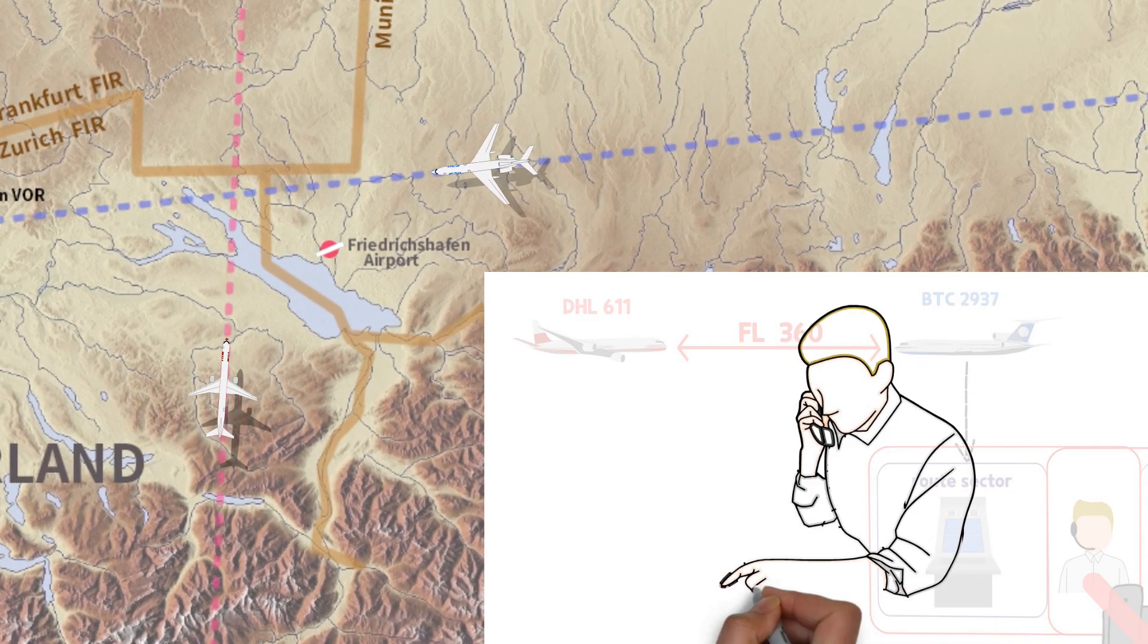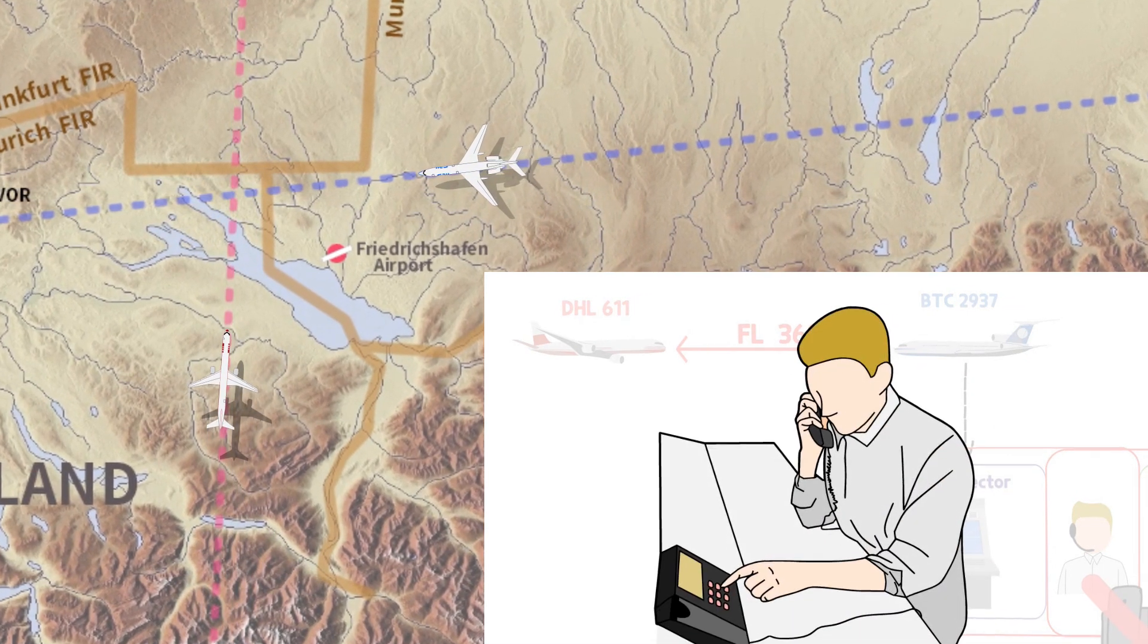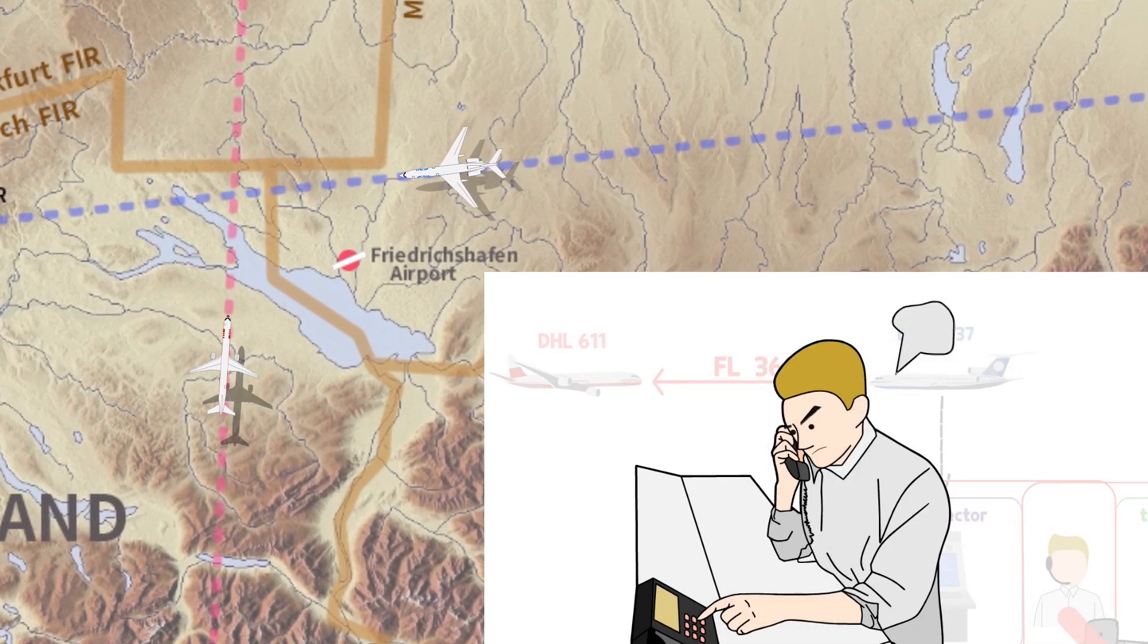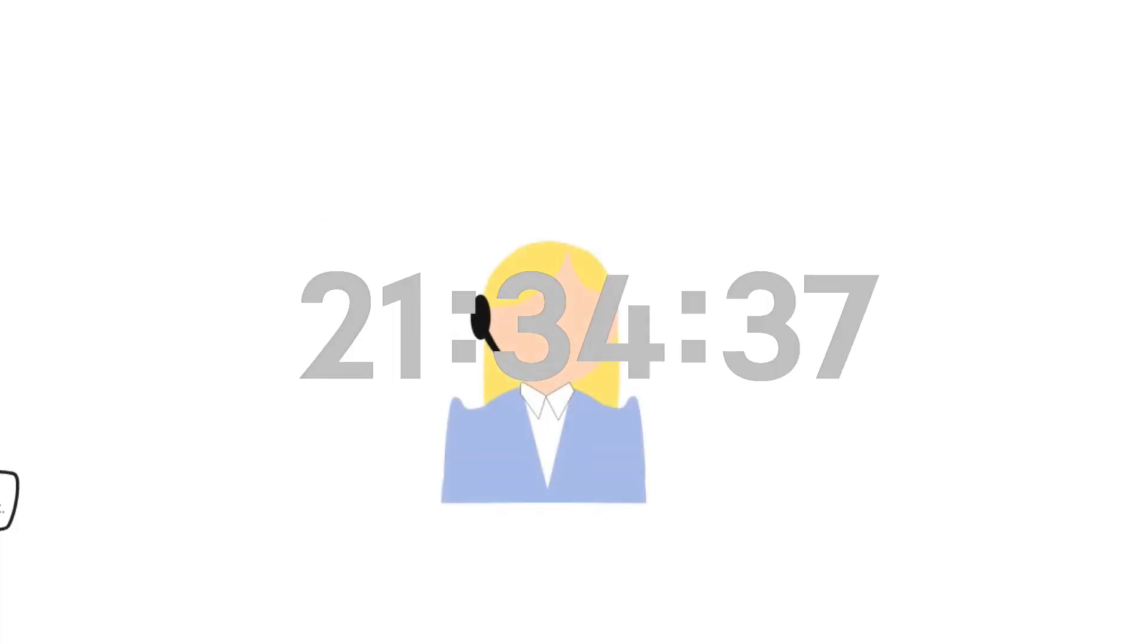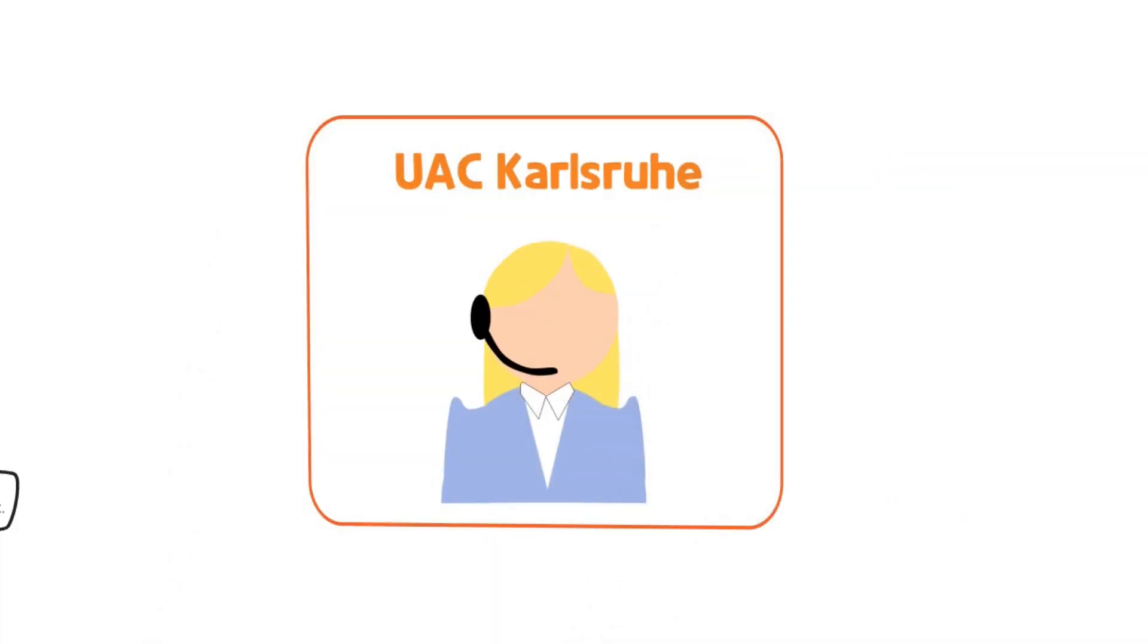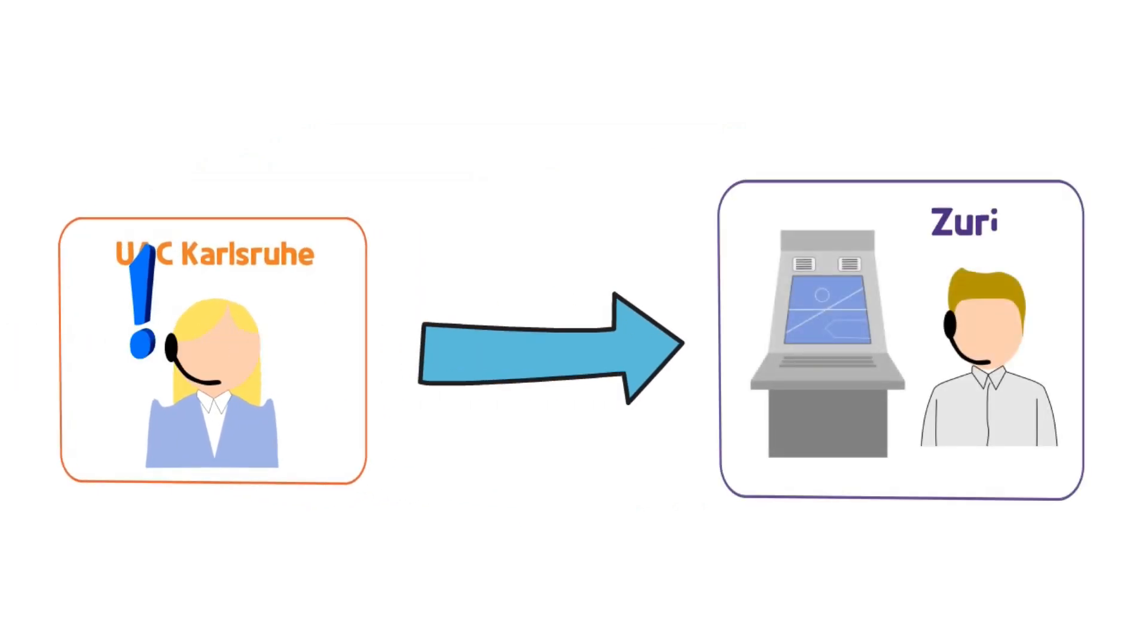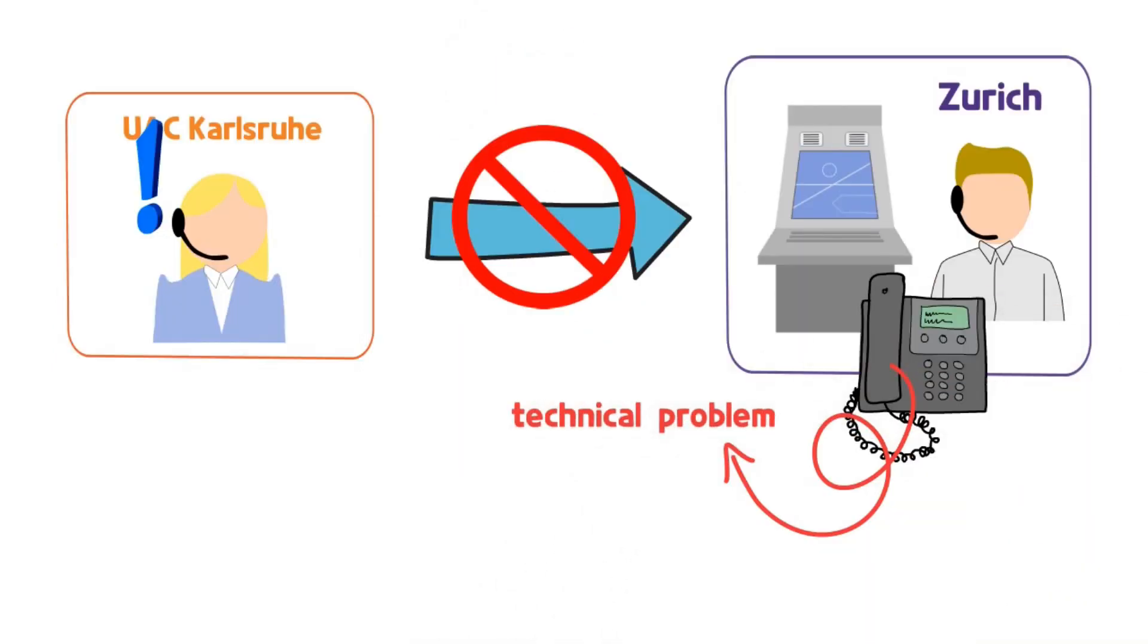The controller tried to contact the Friedrichshafen tower several times again. However, no contact was reached, and the controller wasted time worrying about this simple task. Controller of a nearby control facility, UAC Karlsruhe, witnessed the collision warning of the two aircraft on the control radar and tried to inform the Zurich ACC by making several phone calls. However, contact was not possible due to a technical problem of the telephone system, and the Zurich ACC controller did not report it to a nearby control facility, even though he had already known about it.